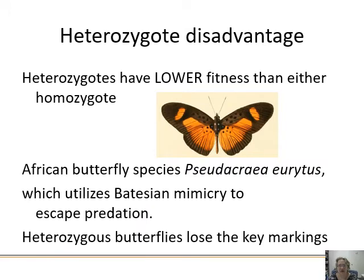There can also be heterozygote disadvantage, which leads to disruptive selection where heterozygotes have lower fitness than either homozygote. The butterfly Pseudocrea urethus uses Batesian mimicry to escape predation, but to have the correct warning coloration you must be homozygous for certain traits — heterozygotes lose the key markings. So either homozygous dominant or recessive survives, and heterozygotes are removed from the population, yet both alleles are still maintained.